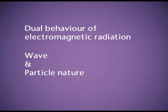The scientists were in a dilemma about what type of nature electromagnetic radiations have, because some properties like interference and diffraction were explained by the wave nature, and the photoelectric effect or the black body radiation were explained by the particle nature. This dilemma was resolved when scientists decided to accept that electromagnetic radiations have dual behavior — that is, they have both the wave nature and the particle nature.